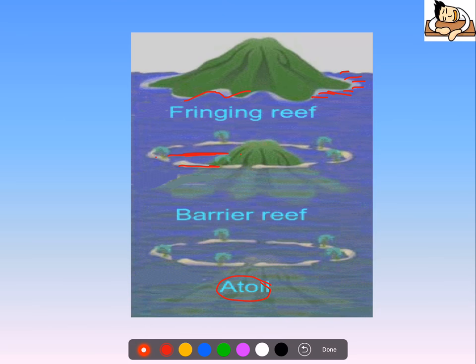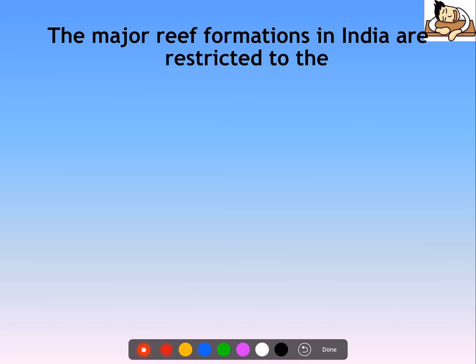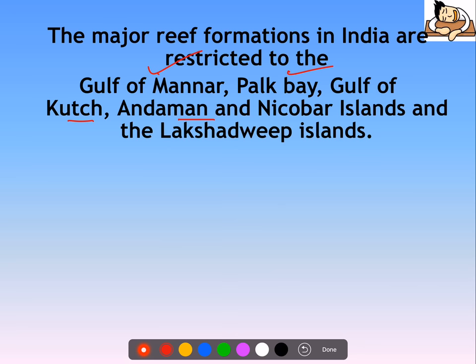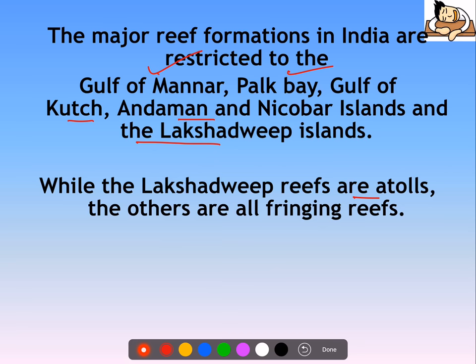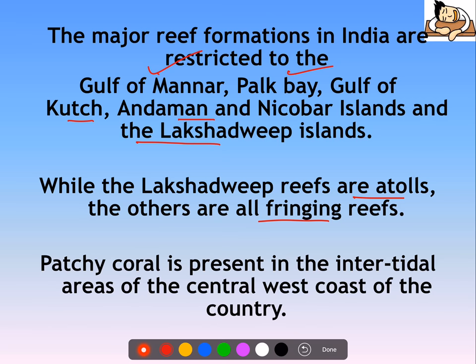The major reef formations in India are restricted to the Gulf of Mannar, Palk Bay, Gulf of Kutch, Andaman and Nicobar Islands, and the Lakshadweep Islands. While Lakshadweep are atolls, all others are fringing reefs. Patchy coral is also present in the intertidal areas of the central west coast of the country.